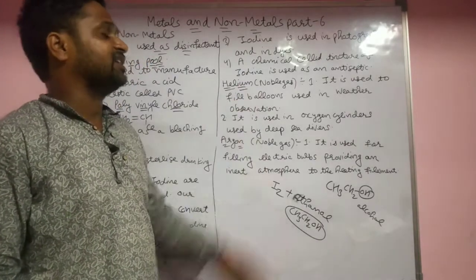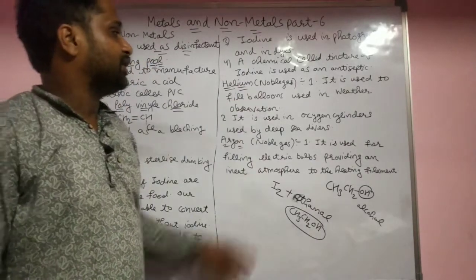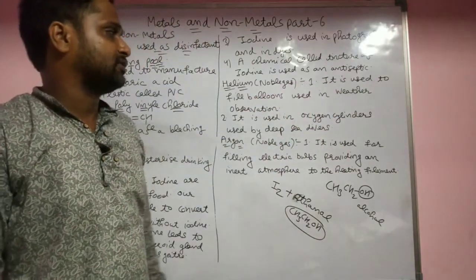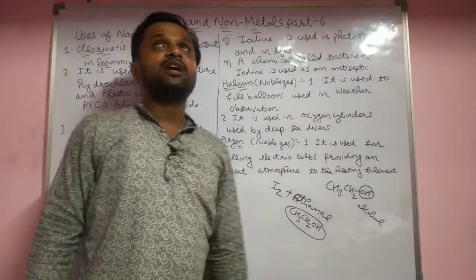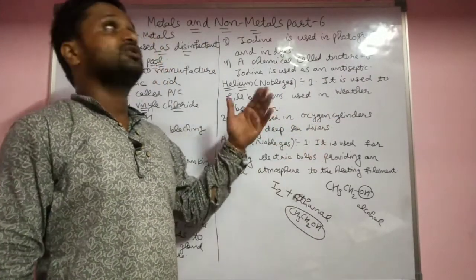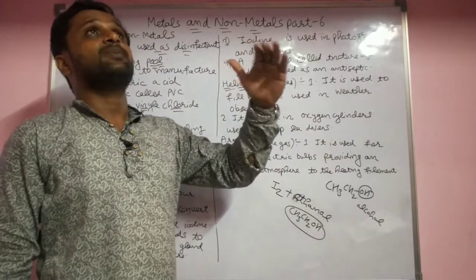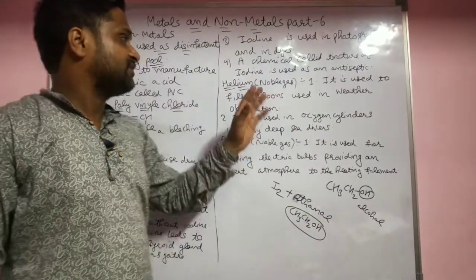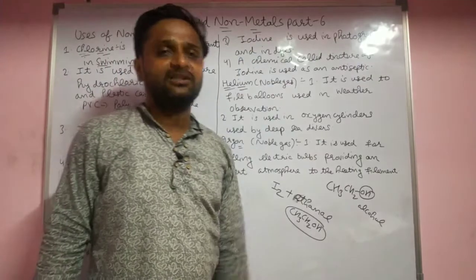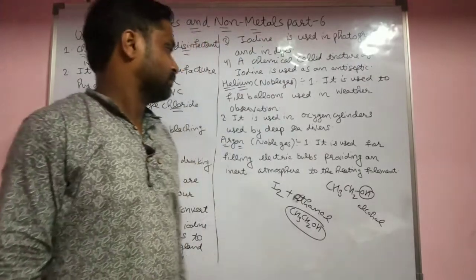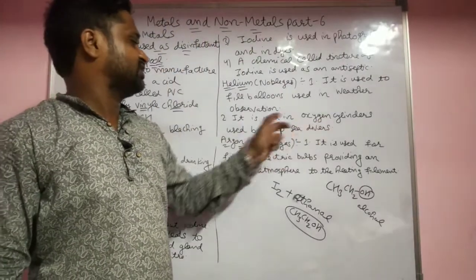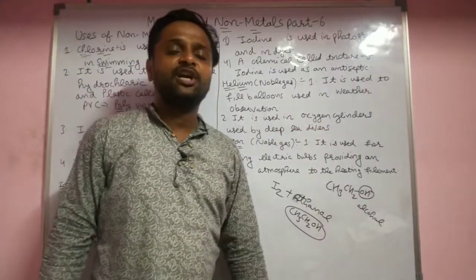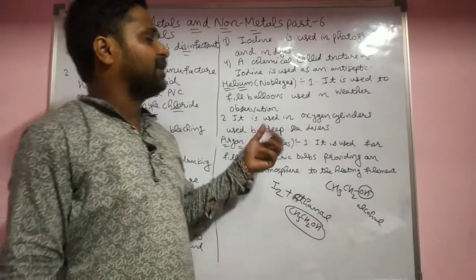Next is helium, a noble gas and non-metal. It is used to fill balloons and is used in weather observation — large balloons are sent up to help with weather forecasting. It is also used in oxygen cylinders for deep divers, where a little bit of helium is mixed with oxygen.